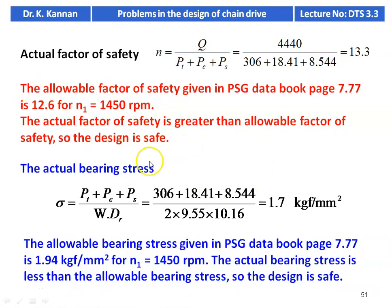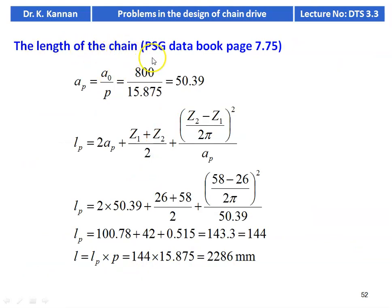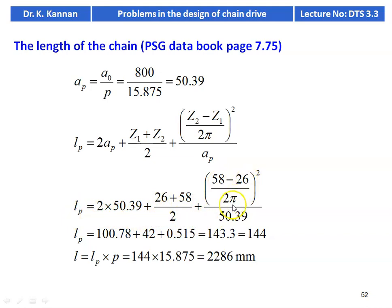These two checks — factor of safety greater than allowable, and actual bearing stress less than allowable — must be satisfied for the chain design. Length of the chain: AP = 800/15.875 = 50.39. LP = 2×50.39 + (26+58)/2 + (58−26)²/(2π)² / 50.39 = 143.3, rounded to next even number 144. Length = 144 × 15.875 = 2286 mm.